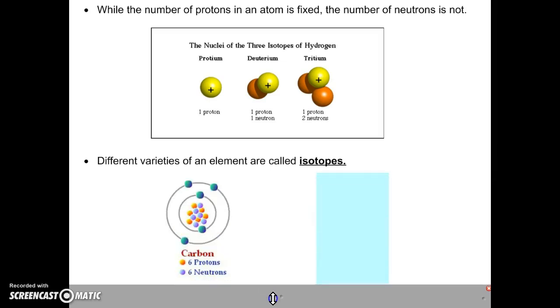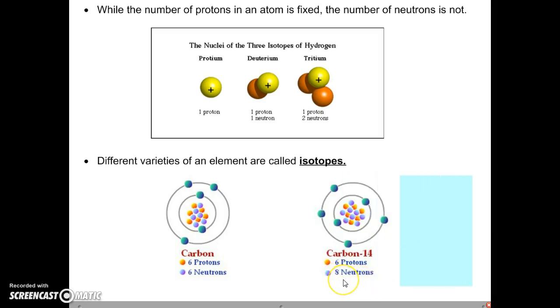Let's look at another one. Let's look at carbon. We said before that carbon always has 6 protons. Sometimes it'll have 6 neutrons also. But there's another isotope of carbon, there's another variety, in which there are 8 neutrons. It's still carbon, it's just a different isotope, a different variety of carbon.